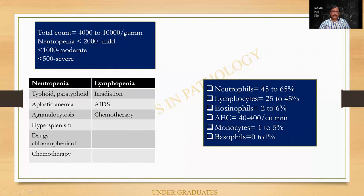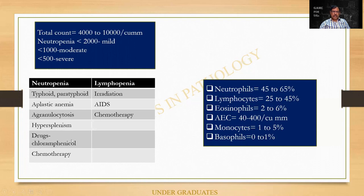The total WBC count is normally 4,000 to 10,000. Neutropenia when less than 2,000 — mild. Less than 1,000 is moderate neutropenia. Less than 500 is severe neutropenia. And it is almost absent in a condition called agranulocytosis. Causes of neutropenia: typhoid, aplastic anemia, agranulocytosis, hypersplenism, drugs such as chloramphenicol, and chemotherapy. Agranulocytosis has been asked as a university question. Lymphopenia can occur after irradiation, chemotherapy, and in patients with AIDS — we call it a burnt-out syndrome.